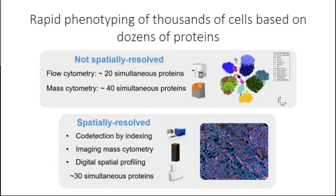Over the past decades, there have been several very powerful technologies emerging for cytometry, which allows rapidly phenotyping thousands of cells based on dozens of proteins. Traditionally, those cytometry technologies have been not especially spatially resolved. The canonical example would be flow cytometry, which in its current version — such as spectral cytometry — can profile 20–30 proteins simultaneously, or mass cytometry, which can routinely profile up to 40 simultaneous proteins from a sample.